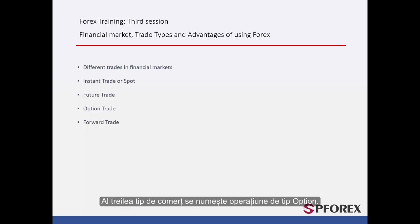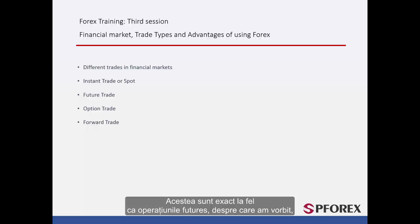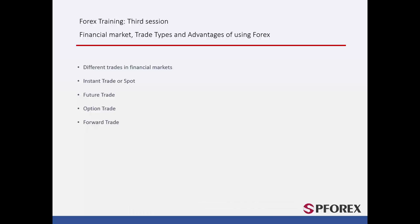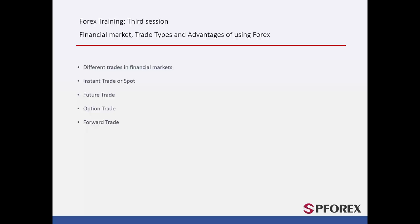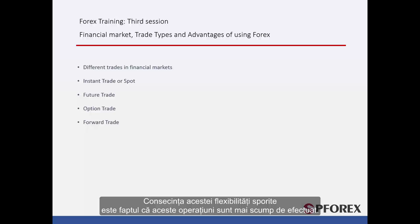The third type of trade is called an Option Trade. These are exactly the same as the future trades we just looked at, except that the agreed upcoming date of the trade can be changed. However, this can only be done if both parties agree on the change of date. The consequence of this increased flexibility is that these trades are more expensive to make.